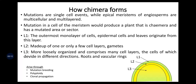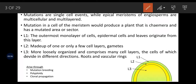Mutations are single-cell events while apical meristems of angiosperms are multicellular and multilayered. Apical meristems are the meristematic cells or the uppermost layer of cells which have a tendency for continuous division. Mutation in a cell of the meristem would produce a plant that is Chimera and has a mutated area or sector. In angiosperms, especially in case of dicots, there are three layers normally named as L1, L2, and L3.